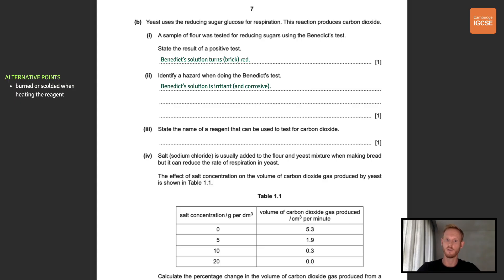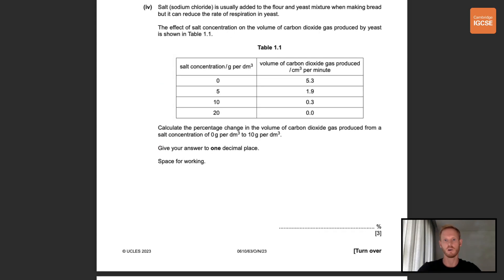Part 3 is to state the name of a reagent that can be used to test for carbon dioxide. So this was covered in chapter 6 on plant nutrition, and chapter 11 on gas exchange in humans. The reagents used were hydrogen carbonate indicator solution, which turns yellow as carbon dioxide levels rise, and lime water, which turns cloudy. Salt is usually added to the flour and yeast mixture when making bread for taste reasons, but it can reduce the rate of respiration in yeast. The effect of salt concentration on the volume of carbon dioxide gas produced by yeast is shown in the table 1.1.